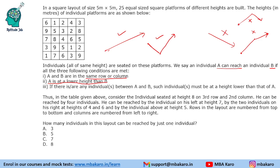Based on this, we need to answer questions. The example given is the individual seated at height 8 on the third row and second column. This person can be reached by four individuals: 7 can go up, 5 can go up, 1 cannot go up because 5 comes in between, 9 cannot go down, 4 can go up and reach 8, and 6 can go down and then up to reach 8.